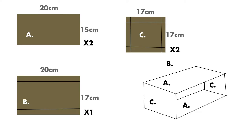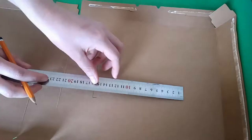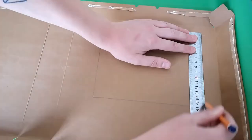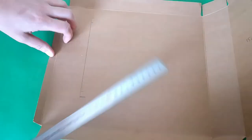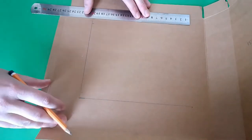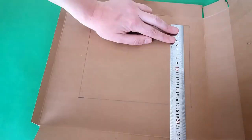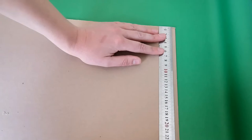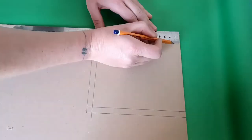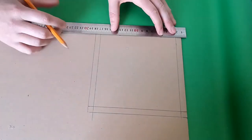These are the dimensions to cut your card to. You're going to need five pieces in total that you will then assemble to create your miniature set. Here I am measuring and cutting out template A — I need two of these. This is template B, of which I only need one, and it will create the back of the set. Here I am measuring and cutting out template C — I need two of these and they will create the sides of the set.